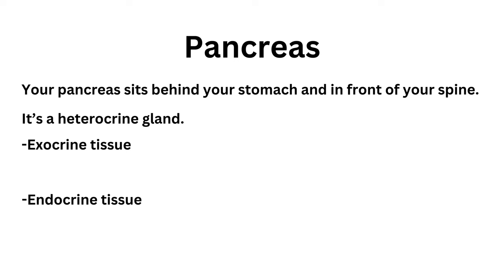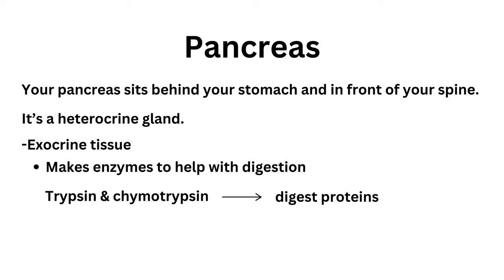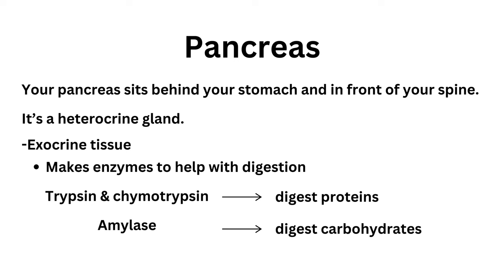It's like a factory with two production lines. The exocrine part of your pancreas makes enzymes that help with digestion, such as trypsin and chymotrypsin that digest proteins, amylase which digests carbohydrates, and lipase which breaks down fats.